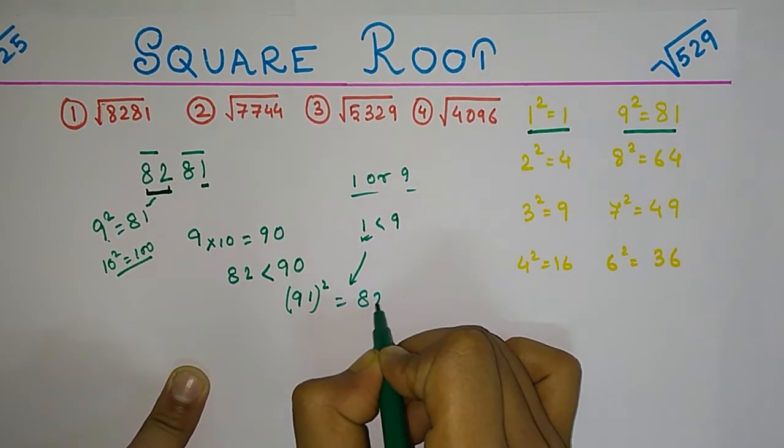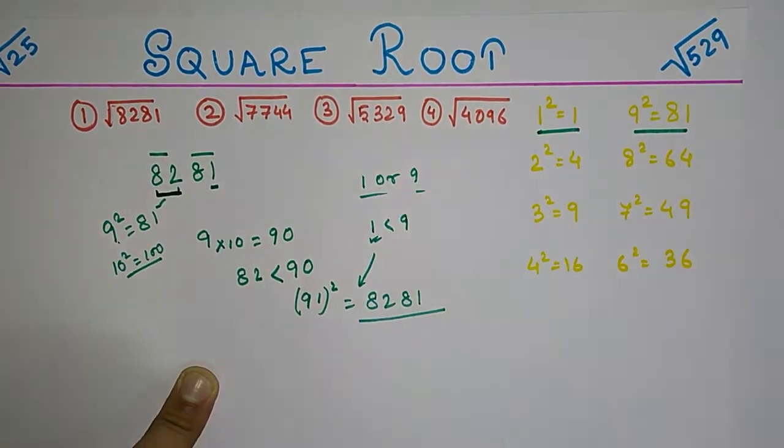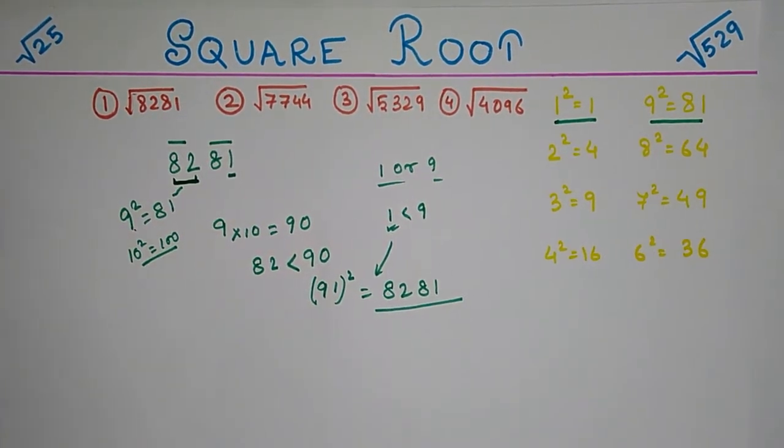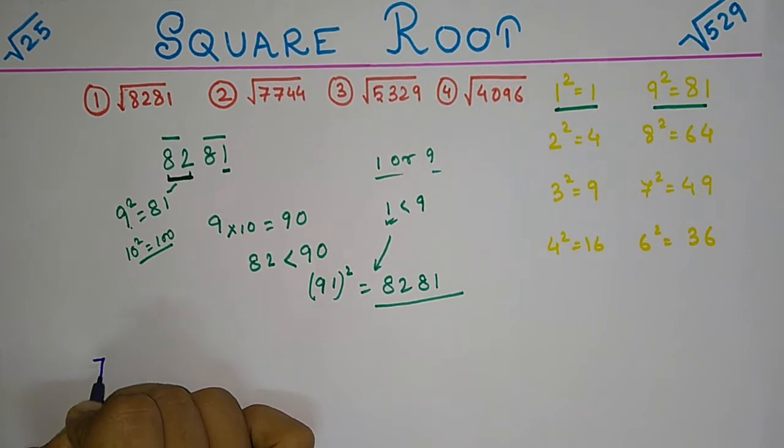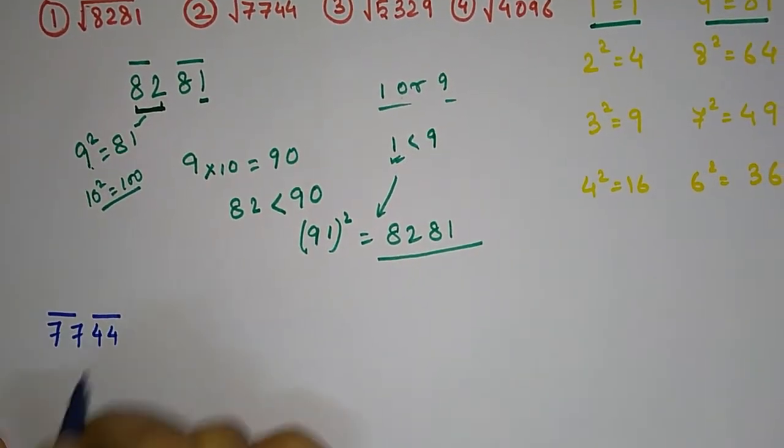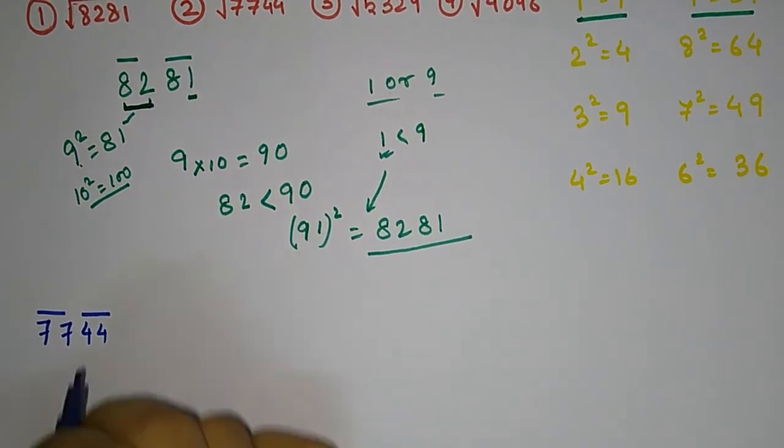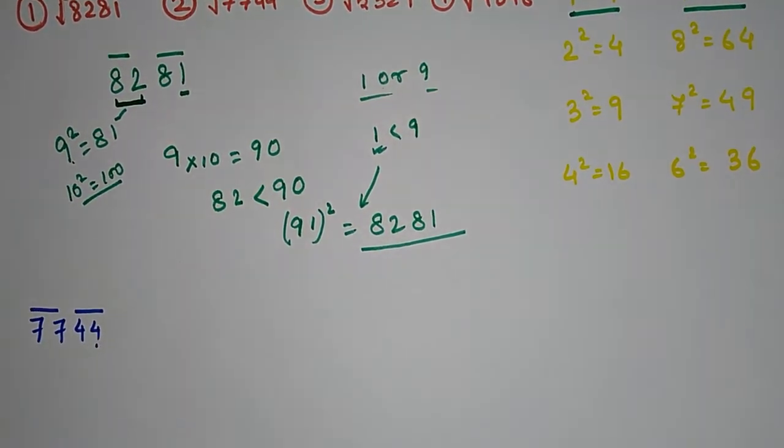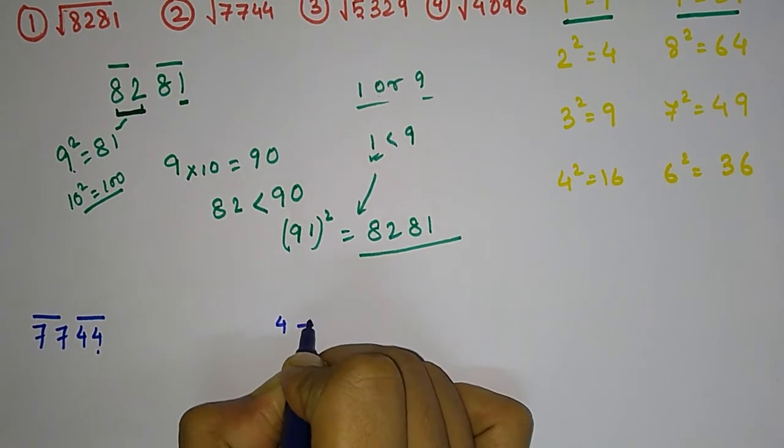That is 7744. First step, divide the number into pairs. The number ends in 4, which comes from 2 squared or 8 squared. So our rightmost part will contain either 2 or 8. Now, for 77, note that 8 squared